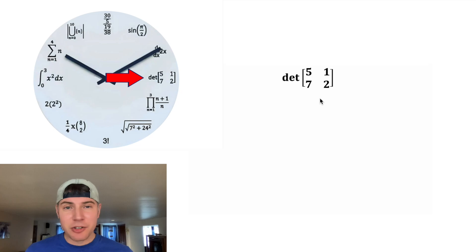Next, we have the determinant of this 2×2 matrix. There's a whole lot to determinants, but finding it is not very difficult. All we do is multiply the two numbers on this diagonal and then subtract the product of these two numbers. That gives us 10 minus 7, which is equal to 3, and that's why this is at the three o'clock hour.